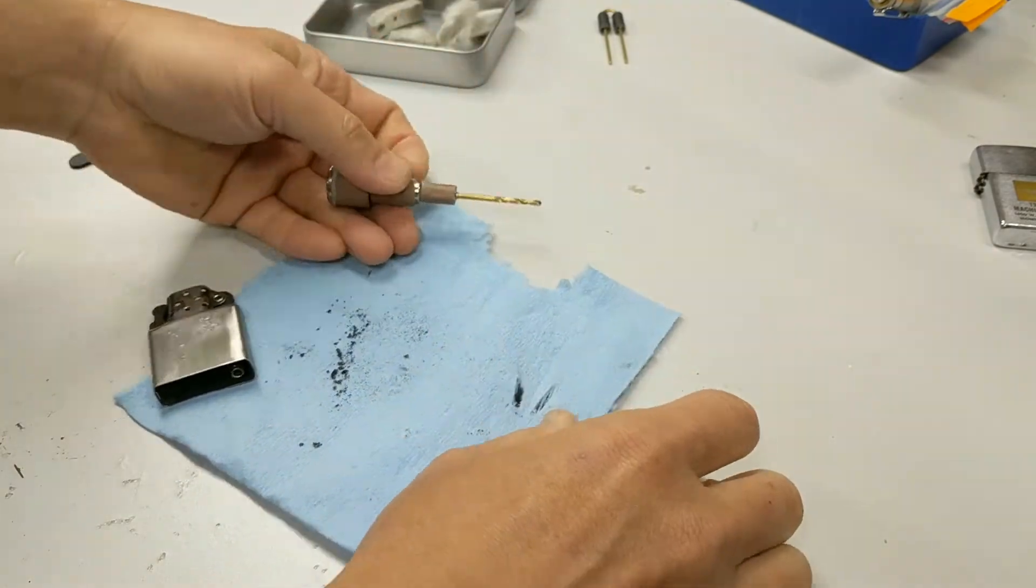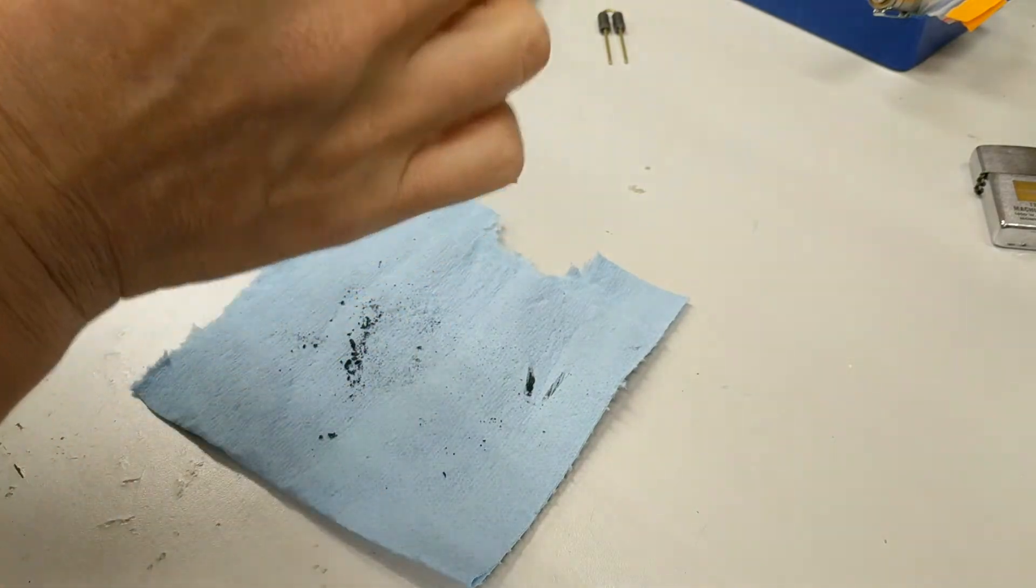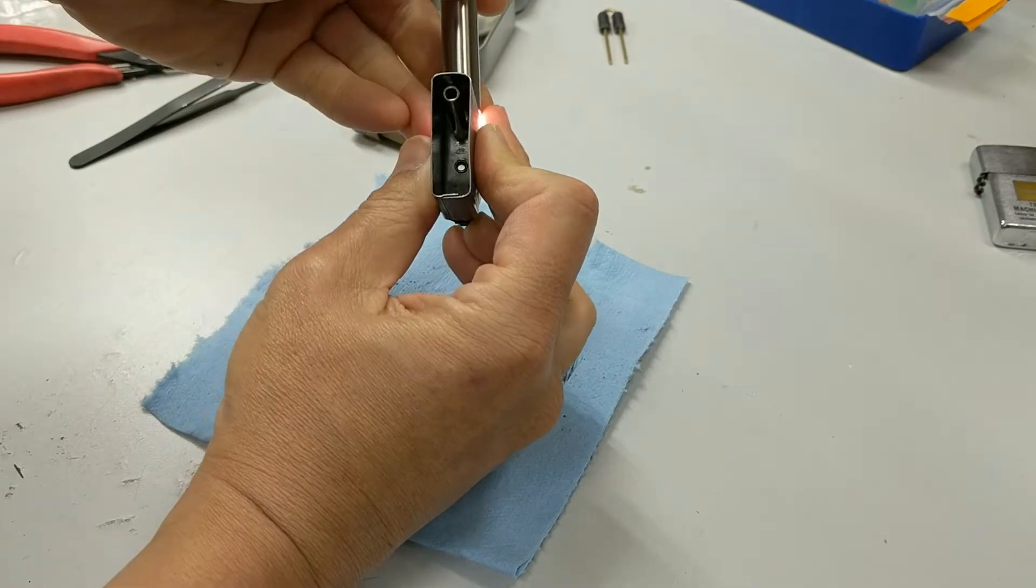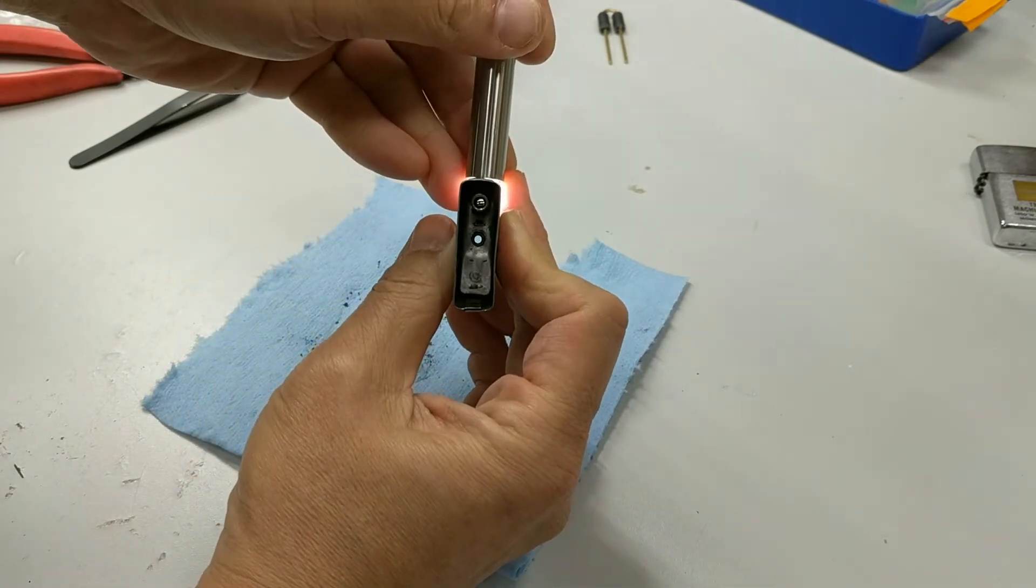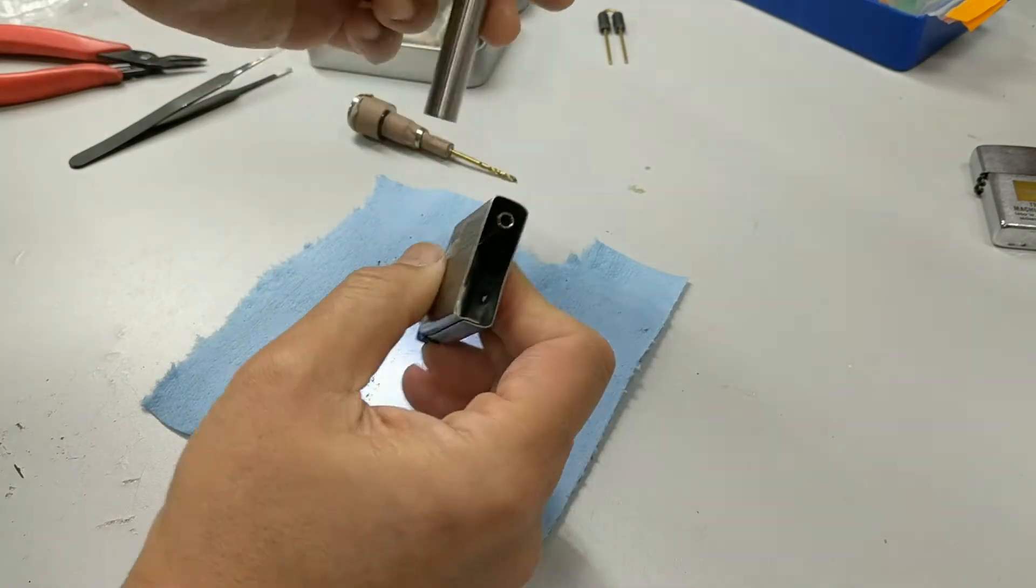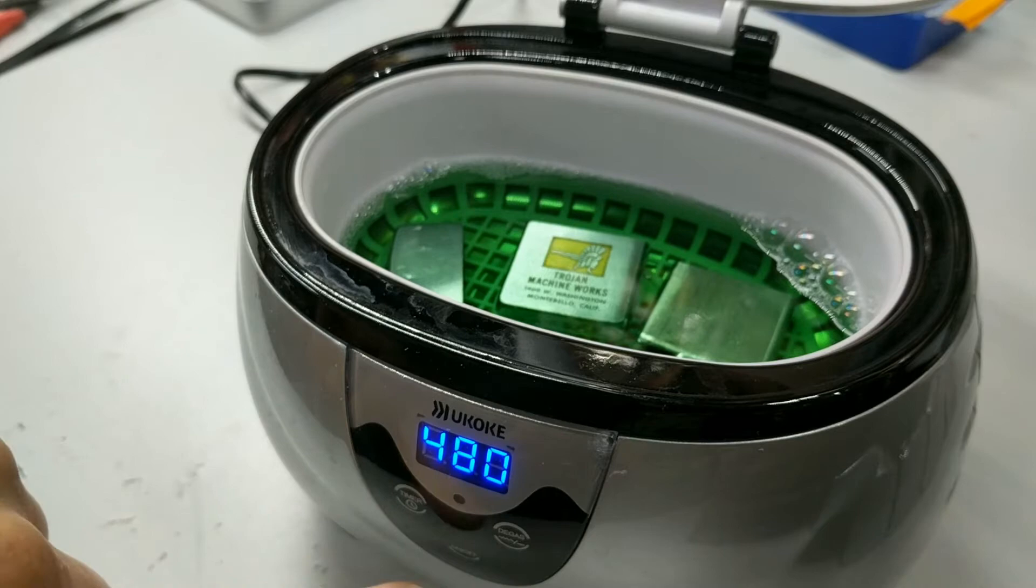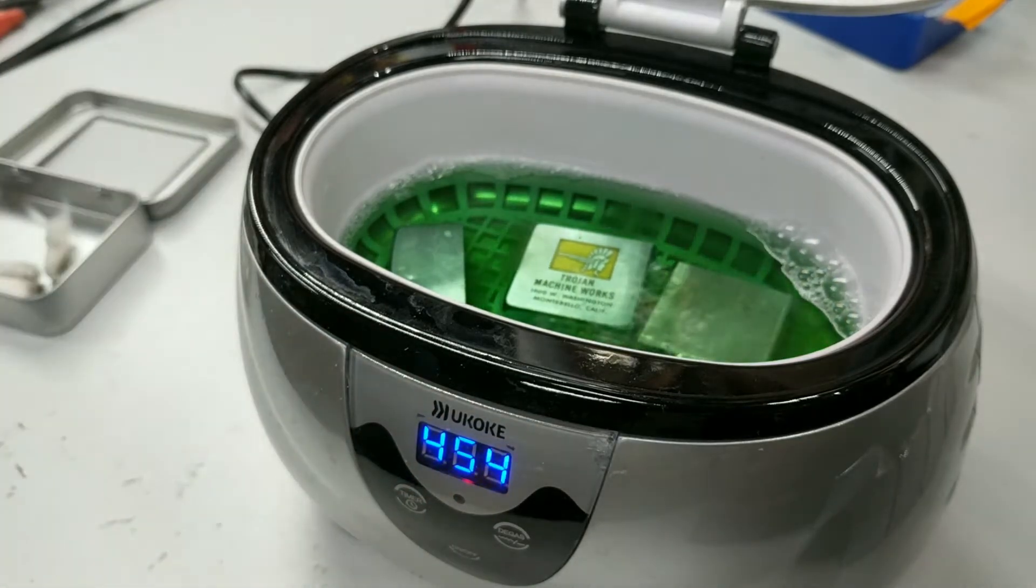This one did not take too long at all. Quick light test and we can now see that the flint tube is clear. Now onto my favorite part and that is the ultrasonic bath. In this case all parts were cleaned together because there was no paint on the etch.